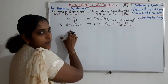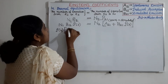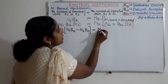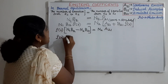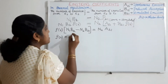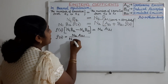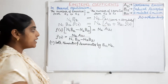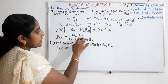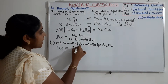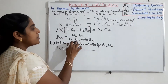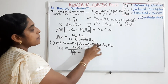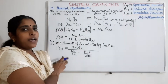Taking ρν to one side, we get ρν · (N1·B12 − N2·B21) = N2·A21. So we can write ρν = N2·A21 / (N1·B12 − N2·B21). Dividing both numerator and denominator by B12·N2, the numerator becomes A21/B12, and the denominator becomes N1/N2 − B21/B12. Here we have an N1/N2 term.